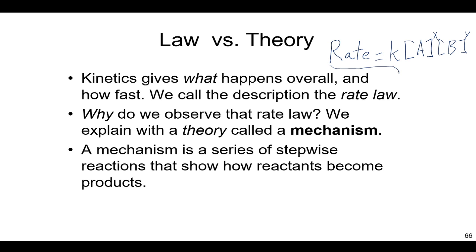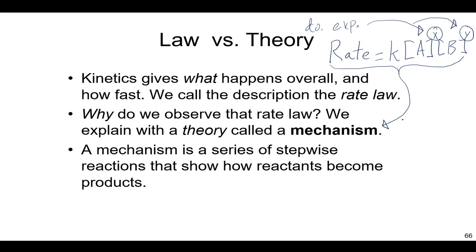But why exactly this would be the rate law for a reaction, and where the orders come from — we learn that by doing experiments, and then that informs us what the mechanism is. We've talked a lot about doing experiments to figure out x and y. Once you know x and y, you can theoretically predict the mechanism. The mechanism is a series of stepwise reactions that show how reactants become products.